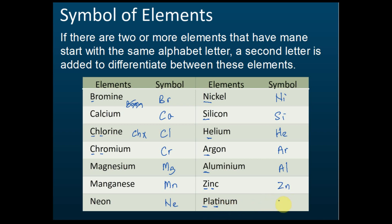These are the symbols of elements where you do not take only the first letter, but instead use the first letter combined with the second, third, or fourth letter as their symbol. You must memorize all of these symbols — it is very, very important.